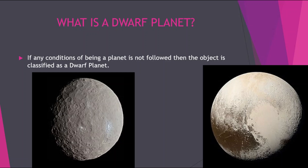Now some of you might be wondering what a moon is. Well, a moon is a celestial object that orbits a larger celestial object. For example, our moon orbits our planet Earth, so it's a moon. Moons are not only of planets — they can even be of dwarf planets.